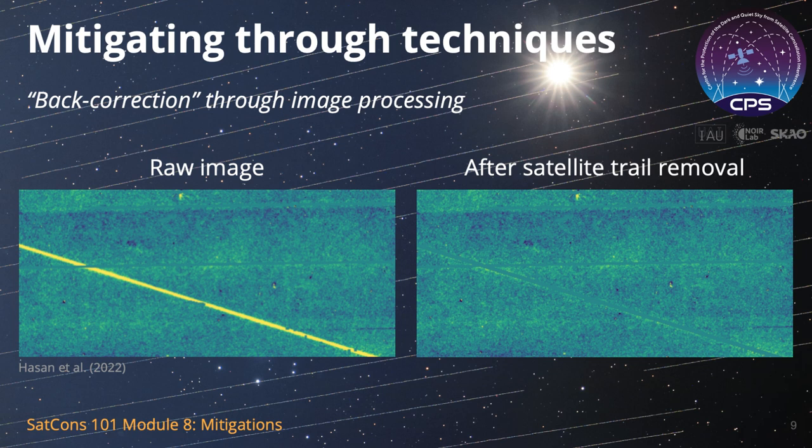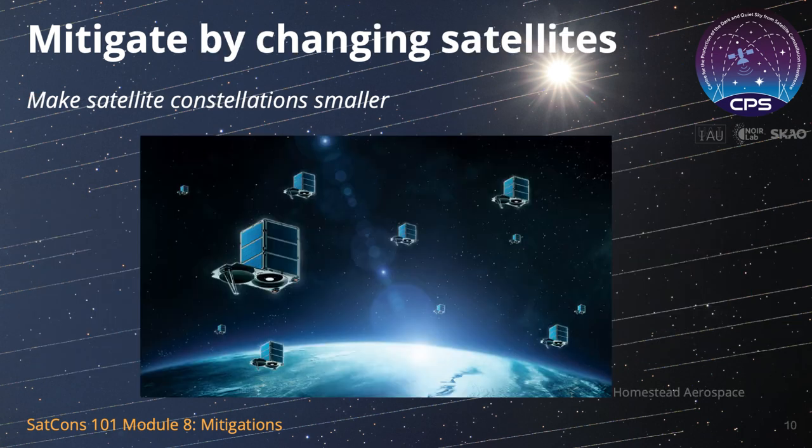Astronomers continue to improve hardware and software to deal with these problems. Certain changes to satellite designs and modes of operation can help reduce their impacts on astronomy. Next, we will describe some of these changes and how they can help.